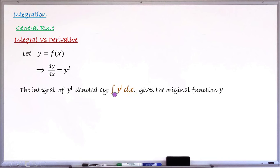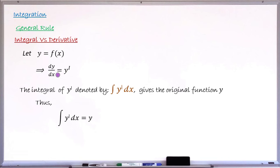The integral of y prime dx — that is with respect to x — gives back the original function y. So if you find the integral of the derivative of the function y, what you are getting is the function back. Thus, the integral of y prime dx equals y, where y is the original function and y prime is the derivative of y. This is the relationship between integral and derivative.